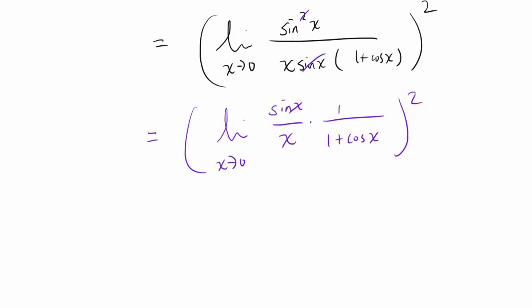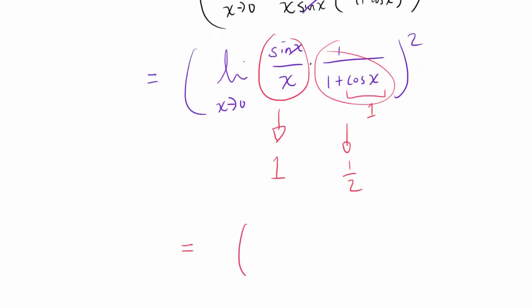And we know limit as x approaches 0 of sin x / x. That's a classic limit. That's going to be 1. And when you plug 0 into cos x, you get 1. So you have 1 / (1 + 1) or 1/2 on this side. So you have 1 times 1/2, and you're squaring that.